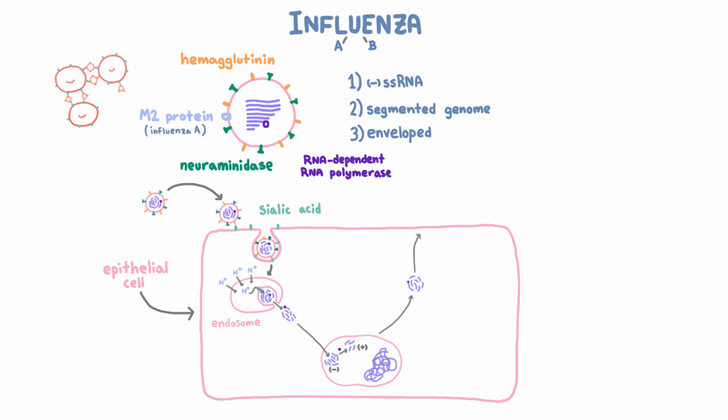New virions bud off the cell membrane where hemagglutinin and neuraminidase were embedded. But the problem is that hemagglutinin is still going to bind sialic acid again, and that would actually prevent the virus from going free.